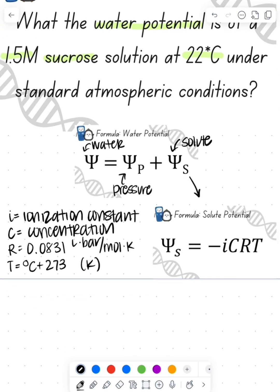So look back at the question. We see we have sucrose, so that means we have an ionization of one because it's a covalent bond. It has a concentration of 1.5 molar. And then we know that our temperature is going to be 22 plus 273, giving us 295 Kelvin.